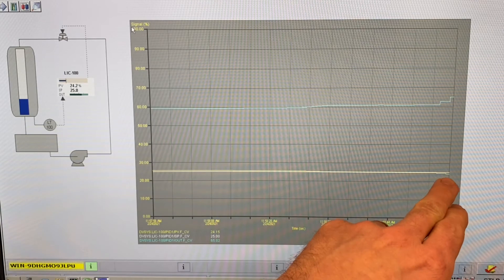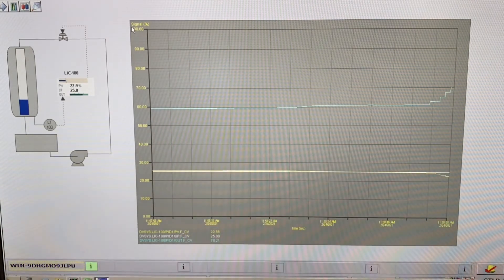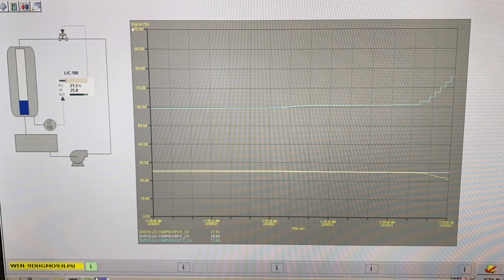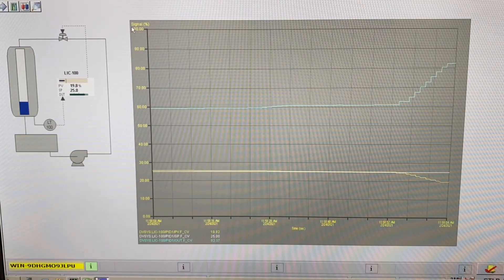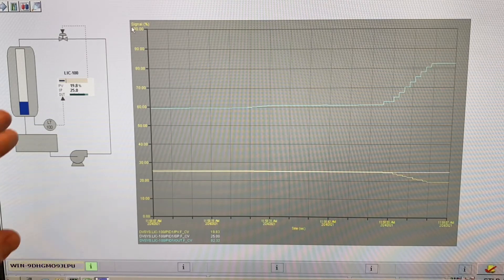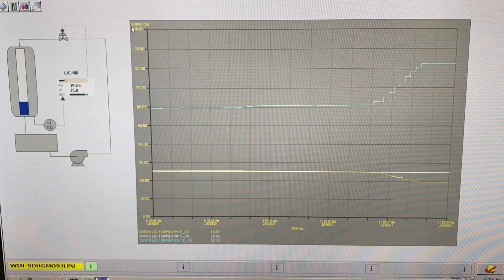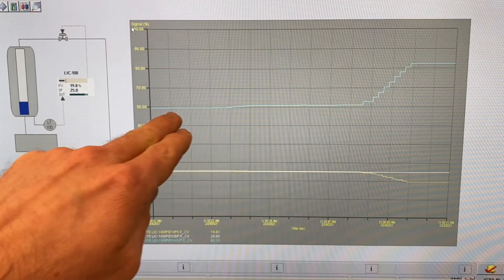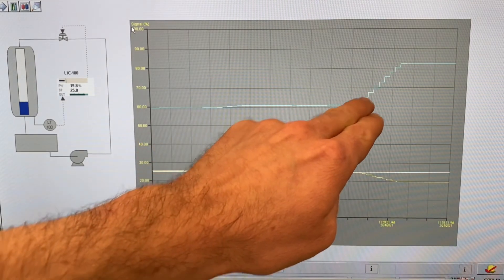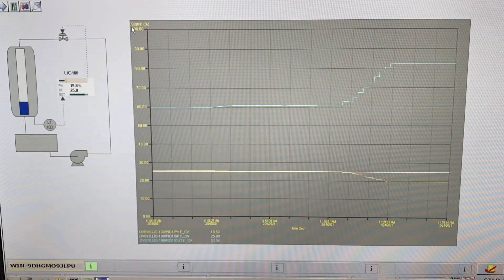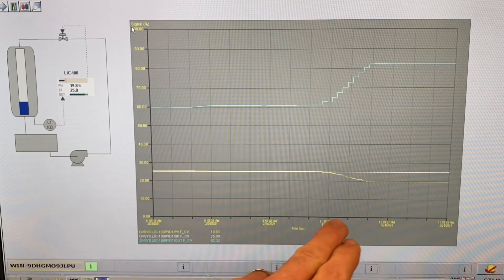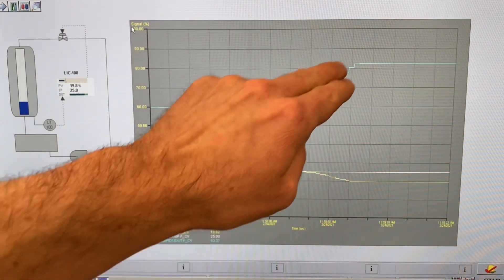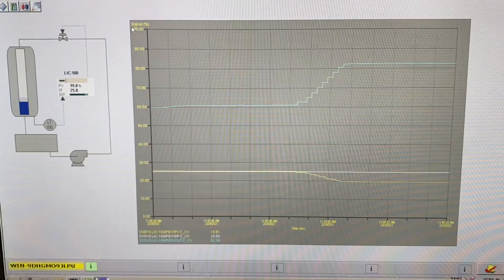So you should see the level start to drop here and you can see there, the controller output starts to climb proportionally. So it's climbed proportionally, I shut the valve, I just shut the valve to stop the level, you can see it flatlined and basically the controller output is a mirror image almost of the process variable or the error here that's being calculated. The only reason is because we have a higher gain setting, that's why there was more of a change up here.